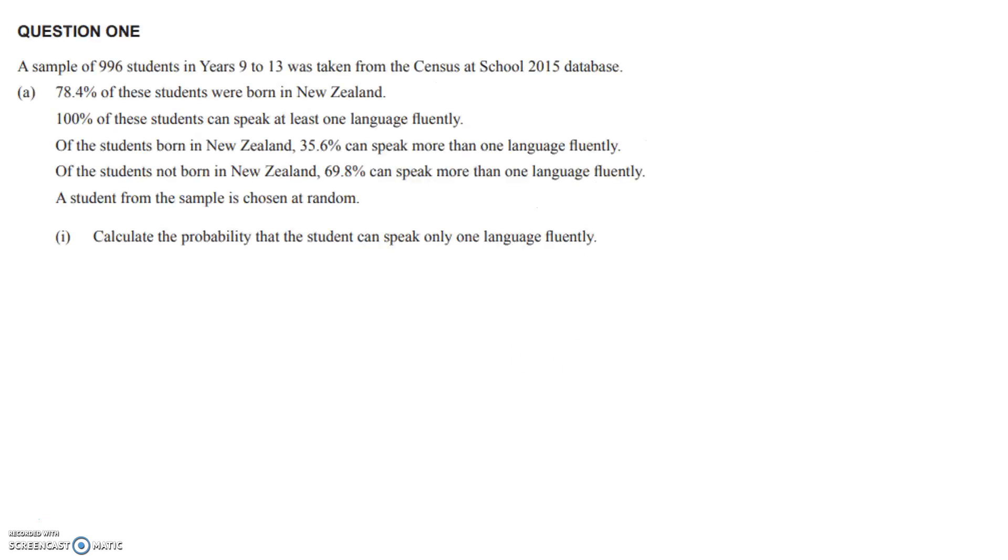Alright, so we're starting off with this one which I would do using a table. Just pause the video and read through it. I think it's a really good idea to highlight what we've got in the question. 996 students in our sample and we've got one group born in New Zealand.